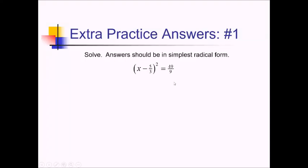For this problem, I noticed that we have a squared term and a constant, so I can actually solve this one just by square rooting both sides. On the left side, that gives me just x minus 5 thirds. And on the right side, since I'm square rooting an equation, I've got a plus or minus root of 49 over 9. Now I can actually square root these right away — that's just going to be 7 over 3, so plus or minus 7 thirds.